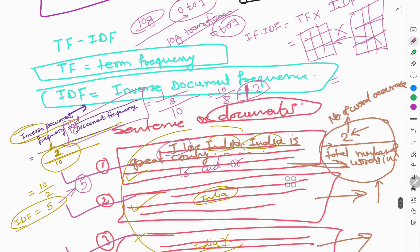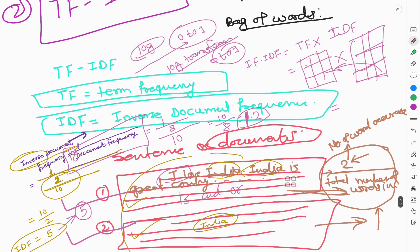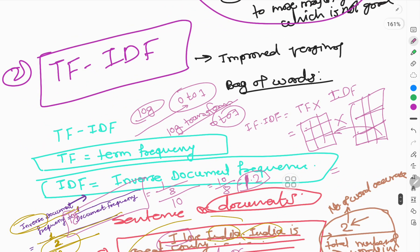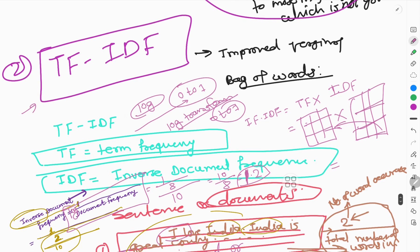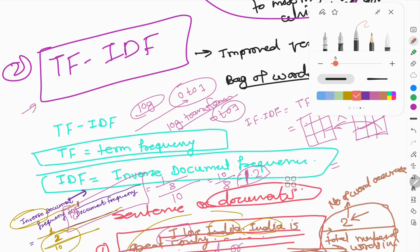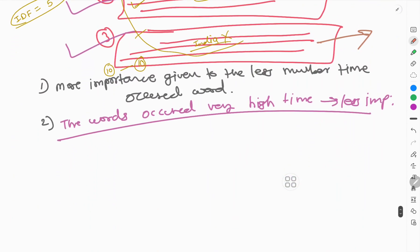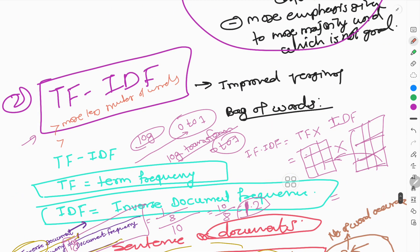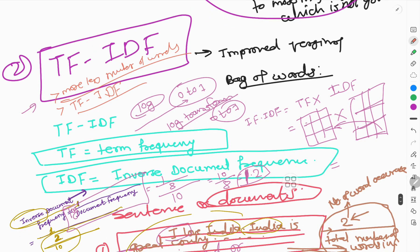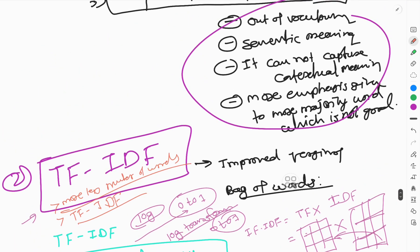Because of TF-IDF, many issues are solved: it gives more importance to words that occur fewer times, it is actually capturing meaning, and it works well for creating your own embeddings from a corpus — removing stop words and providing better embeddings. It is far better than bag of words, avoiding the sparse matrix and sentence issues.